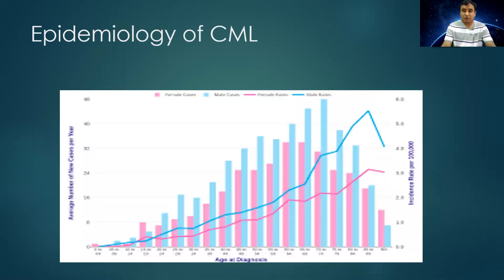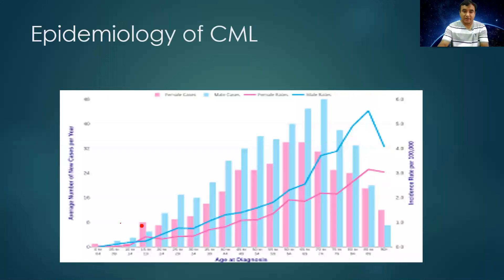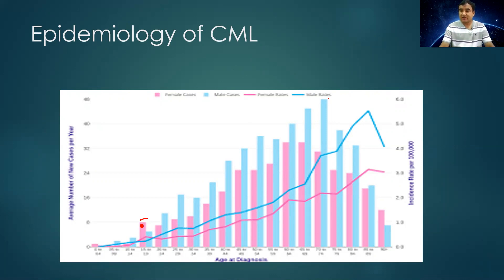Let us now discuss chronic myelogenous leukemia. Looking at this chart, the red represents the female population and the blue represents the male population, with the bars indicating age groups. Chronic myelogenous leukemia has a prevalence that increases with age, and the peak incidence is around 50 to 60 years. It is more common in males. CML is a disease of elderly people, predominantly males, and is relatively uncommon below 20 years of age.